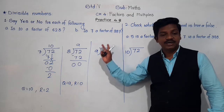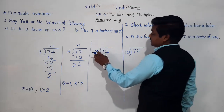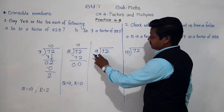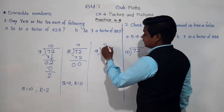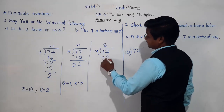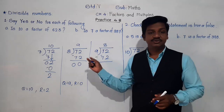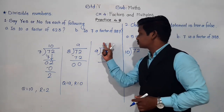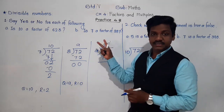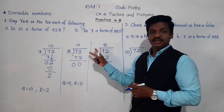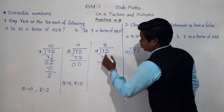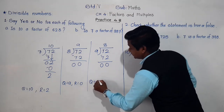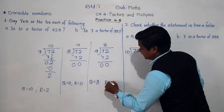Let's divide 72 by 9. 9 twos are 18, 9 threes are 27, 36, 45, 54, 63, and 9 eights are 72. When we divide 72 by 9 and come to the 9 times table, 9 eights are 72. So 2 minus 2 is 0, 7 minus 7 is 0. Here the quotient is 8 and the remainder is 0.